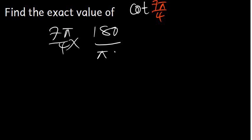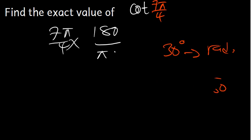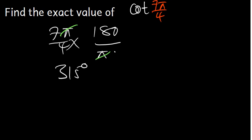Now, if you are trying to convert, for example, 30 degrees into radians, what you have to do is take 30 degrees times π over 180. Now let's go ahead and find 7π/4 in degrees. We know that π and π will cancel, and 180 divided by 4 is 45. Then 45 times 7 gives us 315.